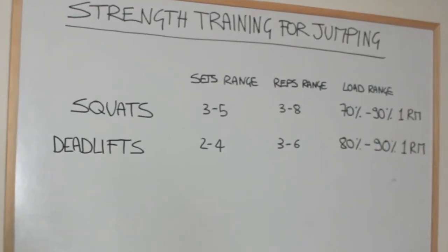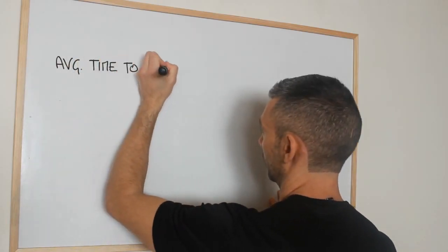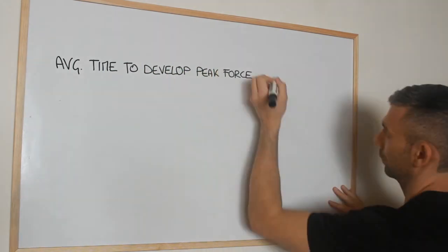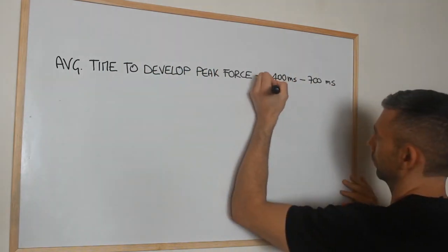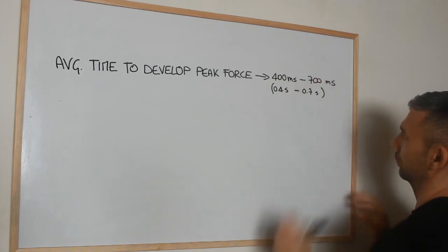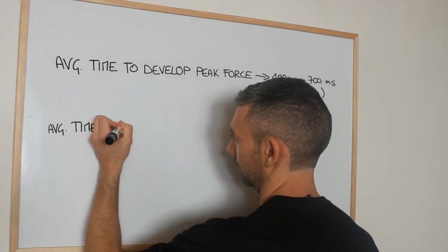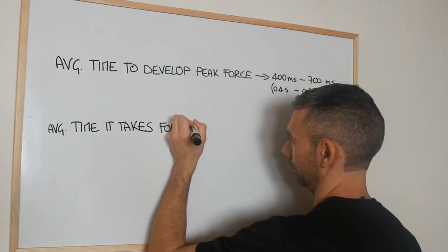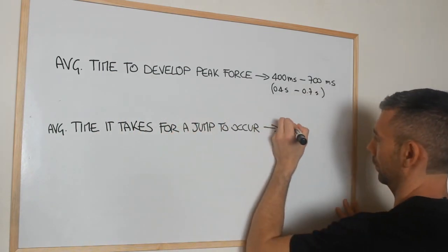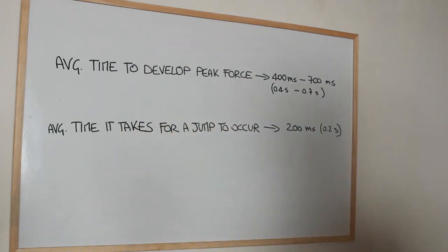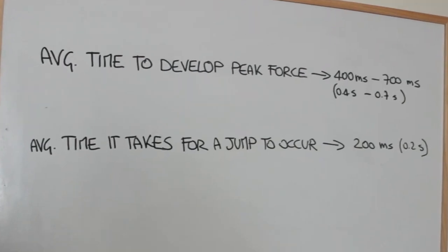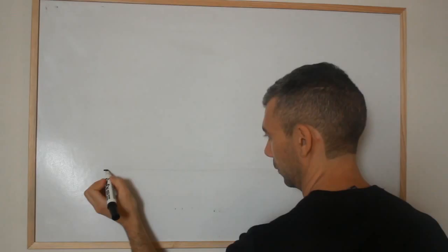To optimize your jumping power, not only must you produce a lot of force but you must also do it quickly. There's a problem because it normally takes 0.4 to 0.7 seconds to develop maximum force, since power output in the muscles depends on how many motor units are being activated. However, most explosive movements such as a vertical jump happen very quickly — approximately 0.2 seconds. Clearly there is not enough time to use all the force you are capable of.